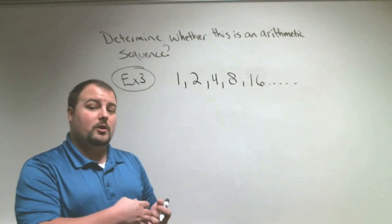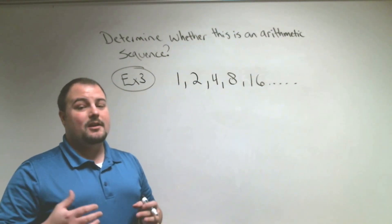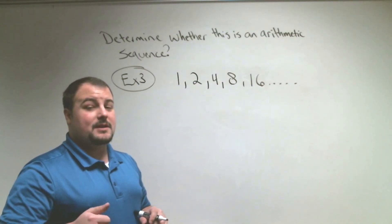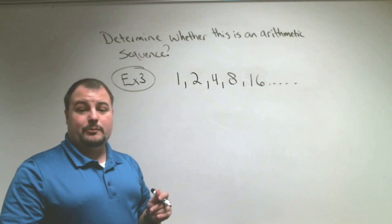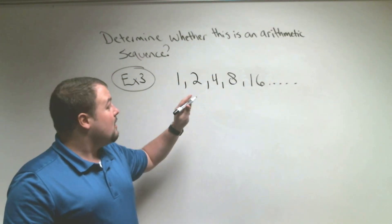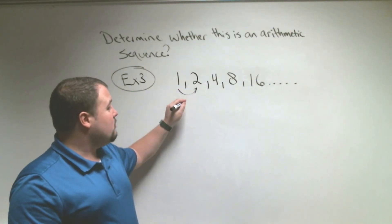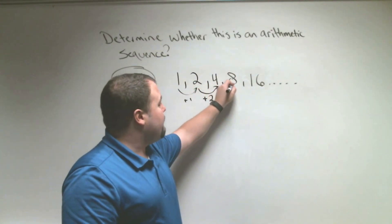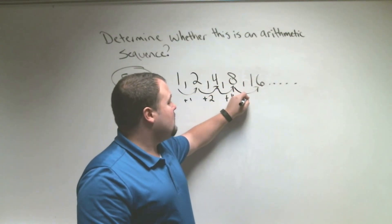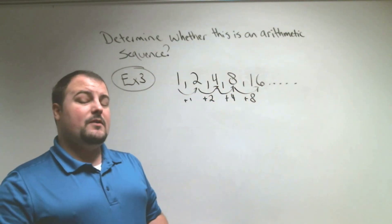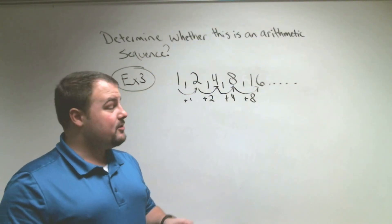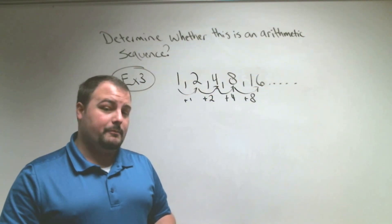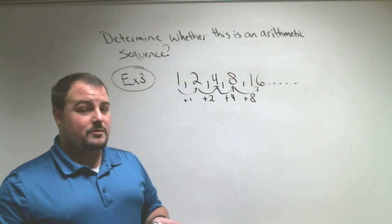Our next example is 1, 2, 4, 8, 16. Hopefully you might know the next number is 32. But this is not an arithmetic sequence. It does have a pattern, but it's not arithmetic because going from 1 to 2 you add 1, from 2 to 4 you add 2, from 4 to 8 you add 4, and from 8 to 16 you add 8. We're adding different numbers. In order to be arithmetic, we have to add or subtract the exact same number.